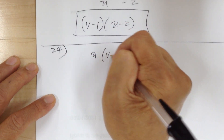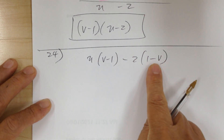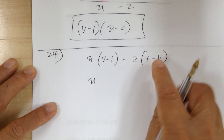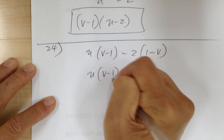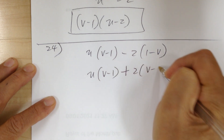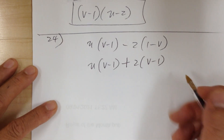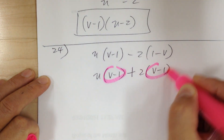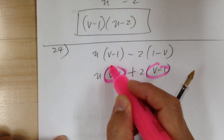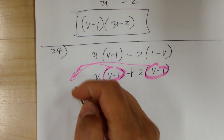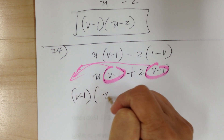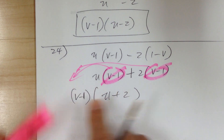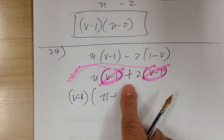Number 24: u(v - 1) - 2(1 - v). Here you don't have a common factor because v - 1 and 1 - v are not the same. Use a negative to switch: factor out a negative from -2(1 - v) to get +2(v - 1). Now both terms have (v - 1) as a common factor. Factor it out: (v - 1)(u + 2). You can verify using the L method or direct factoring.